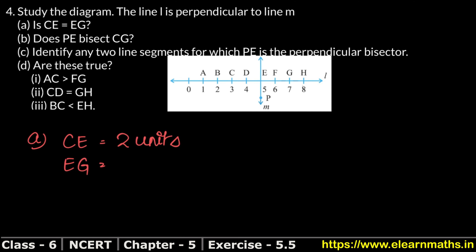And now let's see EG — EG is also 2 units: 1 unit and 2 units. So both are equal. CE and EG are both 2 units. So we can say CE is equal to EG.